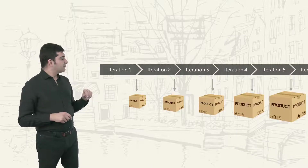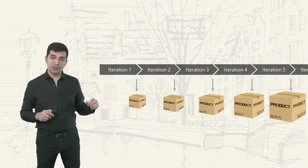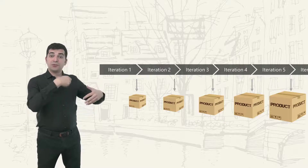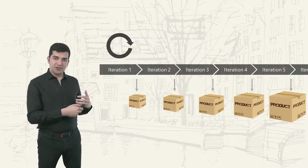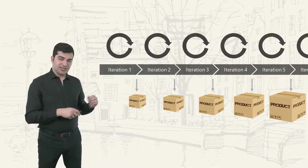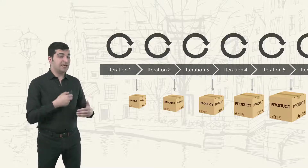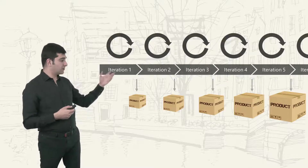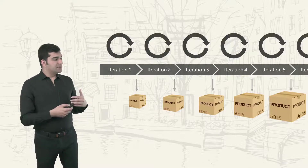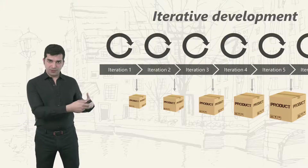Let's get back to this adaptive life cycle. We have multiple partitions of time, and inside each of those partitions we will repeat all the development phases — analyze, design, construct, integrate, and test. We repeat them; we are iterating. That's why these partitions are sometimes called iterations, and this type of development is called iterative development.